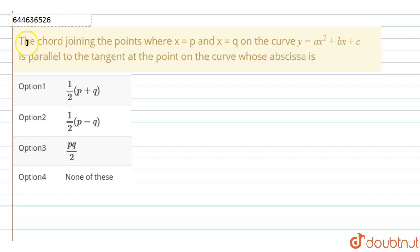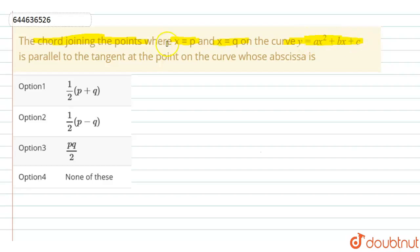One question is: the chord joining the points where x is equal to p and x is equal to q on the curve y is equal to ax squared plus bx plus c is parallel to the tangent at the point on the curve whose abscissa is?